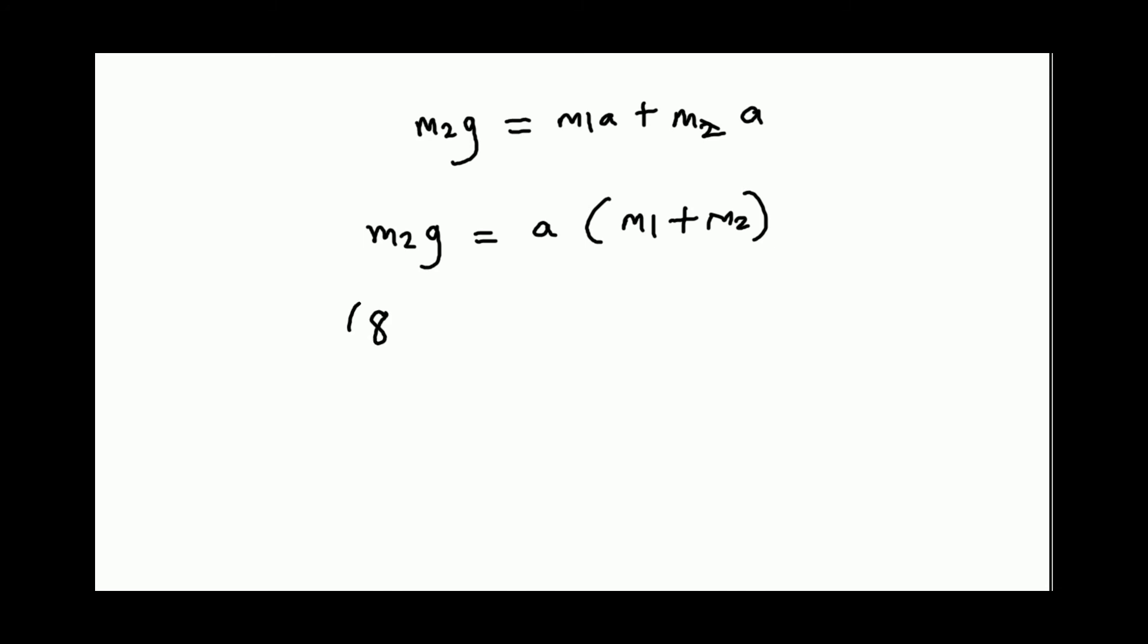So we get M2 is 8. Acceleration due to gravity is 9.8. M1 is 2, M2 is 8. So we get 8 times 9.8 equals 10a, which gives us 78.4 equals 10a. So what is a? 78.4 divided by 10, and that is 7.84 meters per second squared.